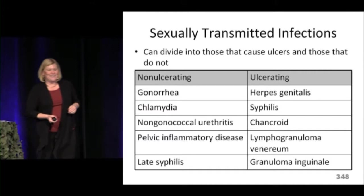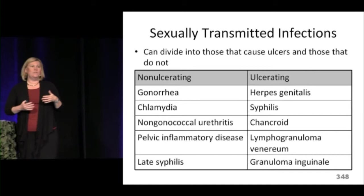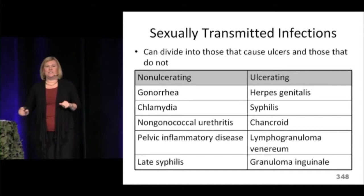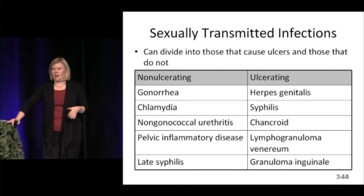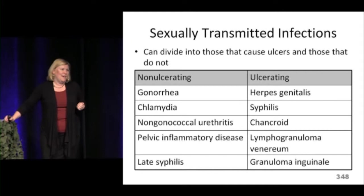When it comes to sexually transmitted infections, there are really two overarching themes: those that cause lesions and ulcers, and those that cause discharge without lesions. This chart breaks down these two categories — non-ulcerating conditions like gonorrhea and chlamydia that cause discharge or dysuria, and ulcerating conditions like herpes and chancroid. Syphilis lives on both sides of the line because it does many different things.